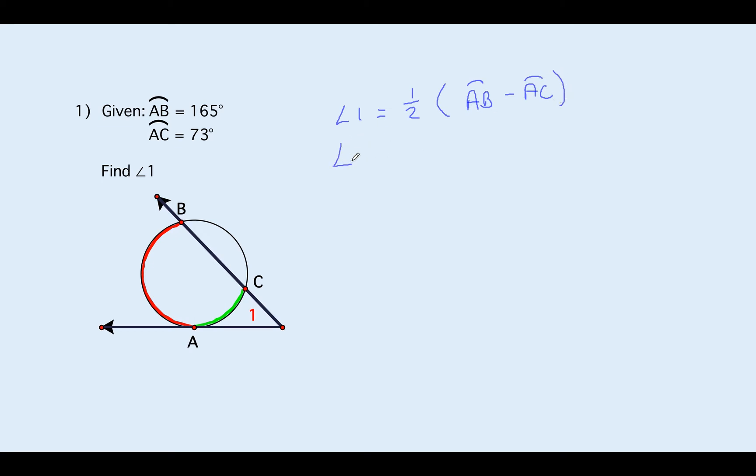Now we're just going to plug in. Angle one is equal to arc AB, 165 minus 73. Angle one is equal to one half, do inside the parenthesis first, and then you're going to take half of the 92 which is 46 degrees. That looks like an acute angle, 46 degrees.